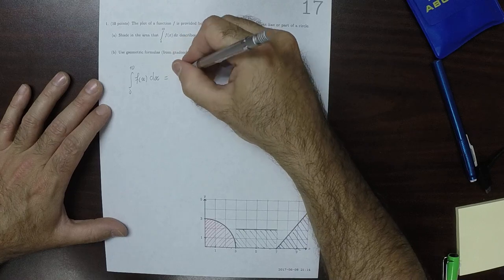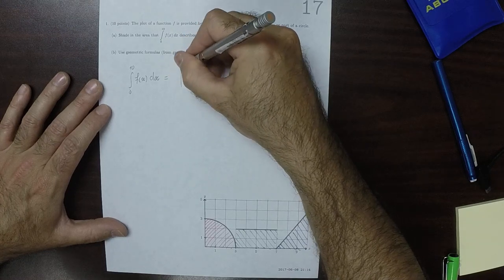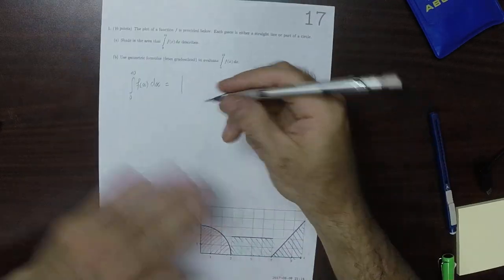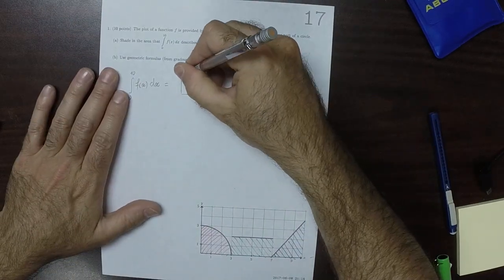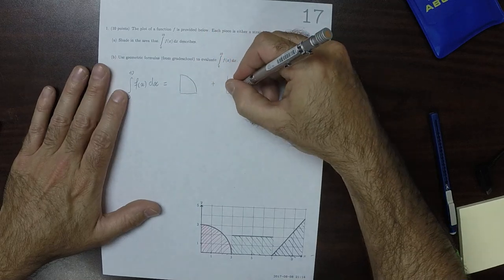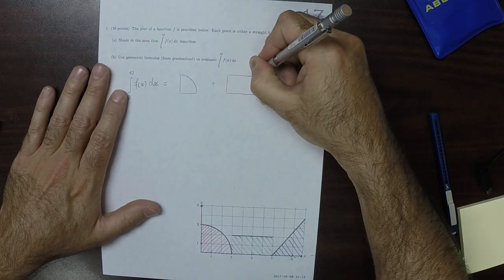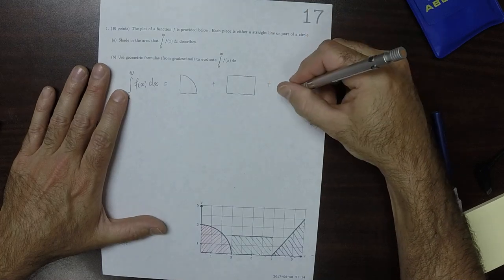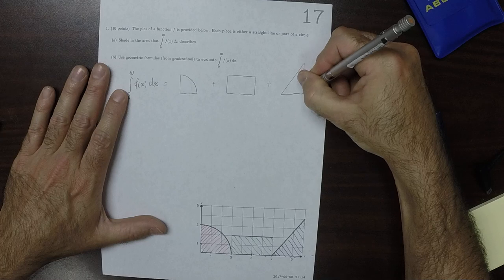That's going to be the area of that quarter circle, plus the area of that rectangle, plus the area of that triangle.